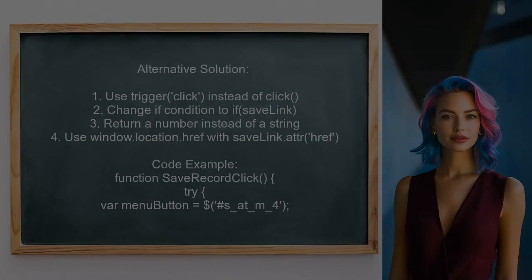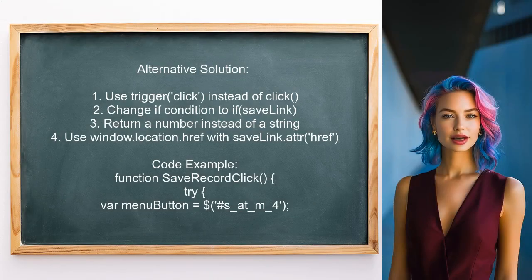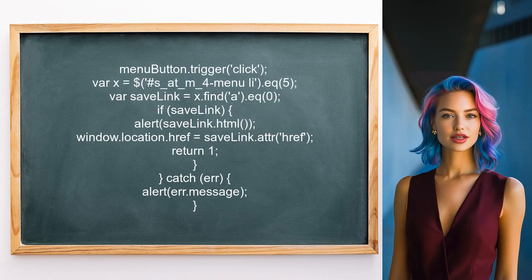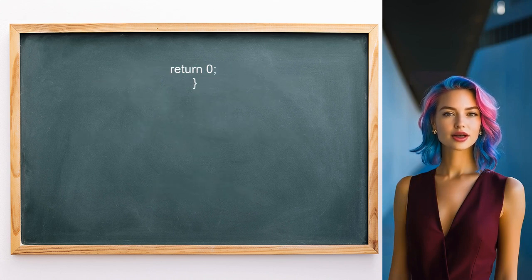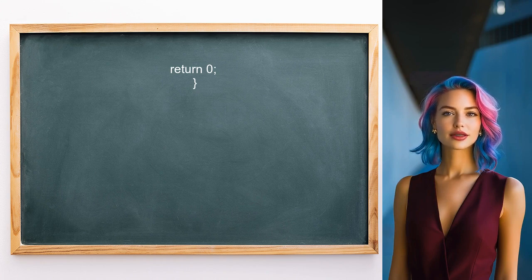Another alternative solution suggests using the trigger method instead of click. This user also recommends changing the if condition to check if save link exists and returning a number instead of a string. Additionally, they advise using window.location.href to navigate to the anchor's href value.